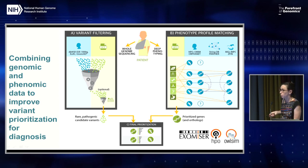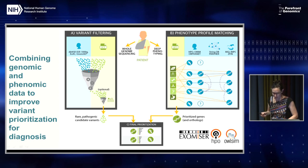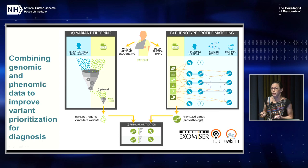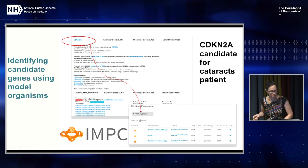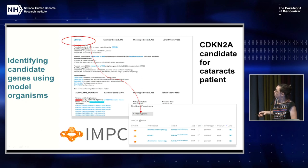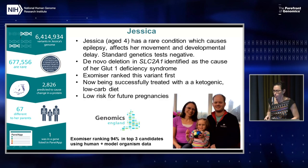Using this process, we're able to improve the diagnostic efficacy in the undiagnosed disease program by between 10 and 20%, depending on how you add it up. Just adding those two organisms and this fuzzy matching process greatly increases the diagnostic capability. We were also able to find a candidate for a patient in the Genomics England program based on a match to a mouse where we didn't have a match to a known human disease, making that mouse an automatic candidate for being a disease model.